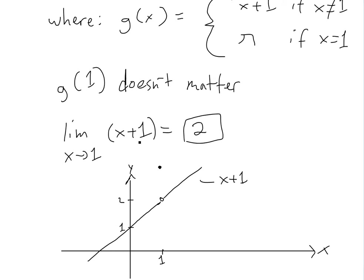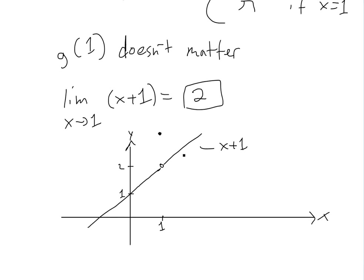If you graph this function g of x, which is x plus one, you can see an open circle at x equals one, y equals two. This open circle means g of one equals pi — that's the actual value at one. But it doesn't matter, because as you approach x equal to one from both sides, you're approaching the value of two. So that's the limit.